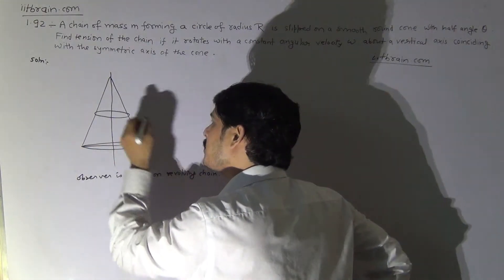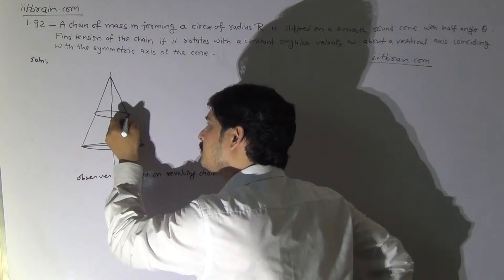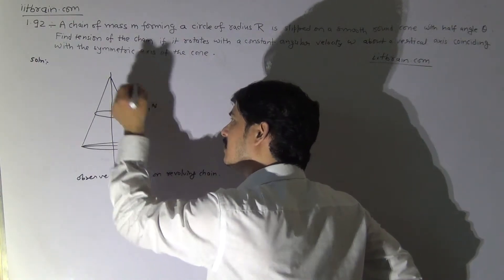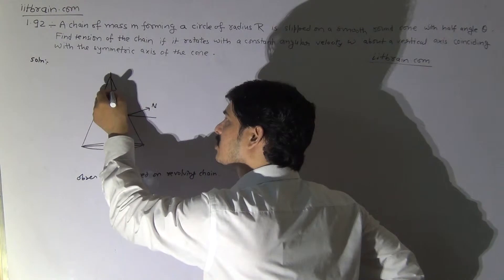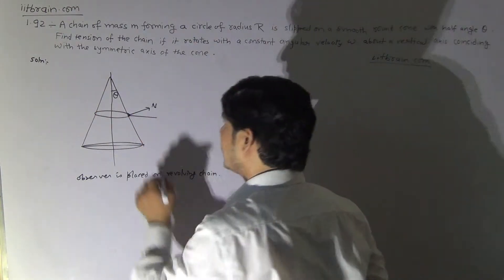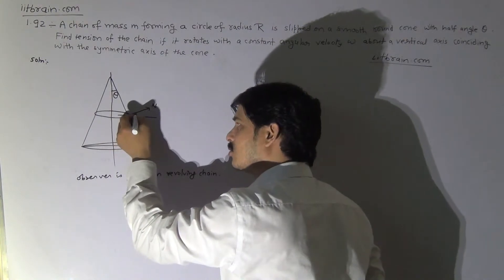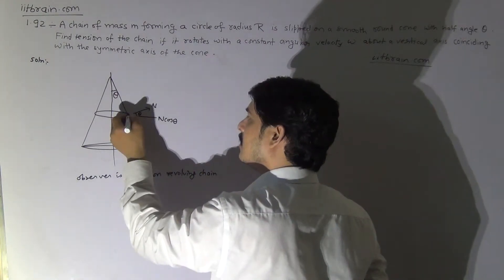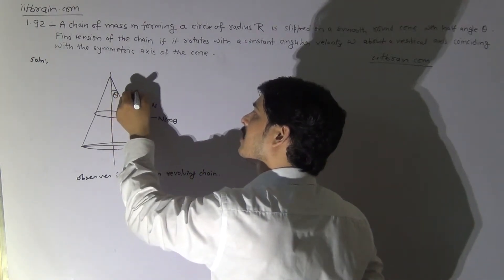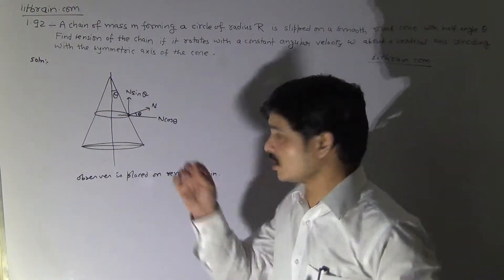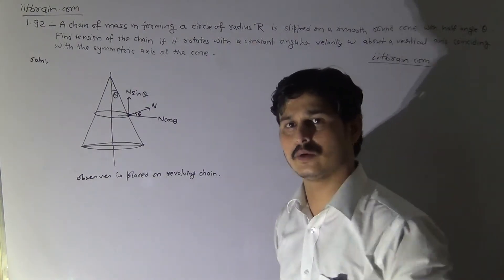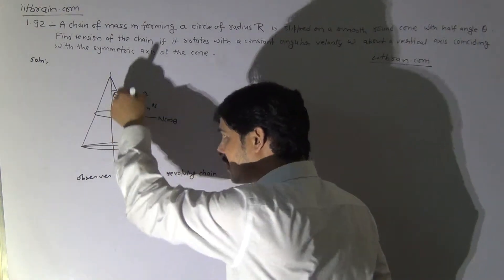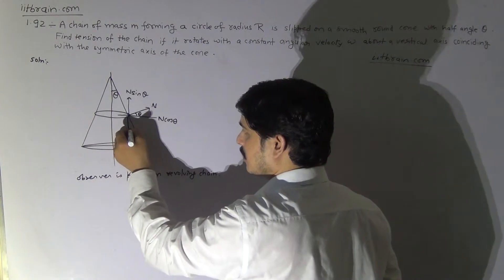Consider a particular element of the chain on the diagram. The half angle is theta, so the complementary angle is 90 minus theta, making the relevant angle theta. The components of the normal reaction will be N cosθ and N sinθ. For this small segment of mass dm, gravity acts downward with magnitude dm·g.